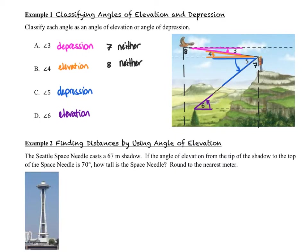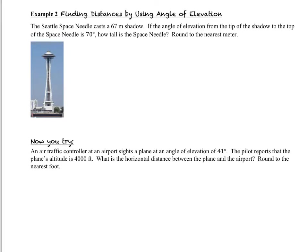Let's take a look at example 2 now: finding distances by using an angle of elevation. The Seattle Space Needle casts a 67-meter shadow. Automatically, we know that that's going to give us a right triangle with the shadow being the horizontal. If the angle of elevation from the tip of the shadow to the top of the Space Needle is 70 degrees, how tall is the Space Needle? We'll round to the nearest meter. We've got an angle and one side length on our right triangle, so we're set up perfectly for SOHCAHTOA.